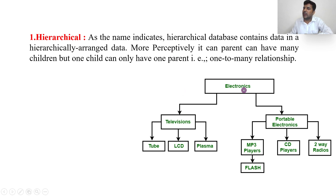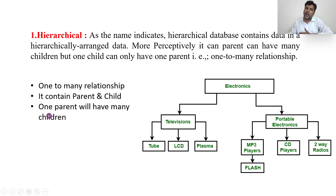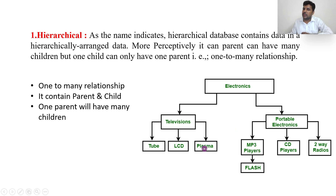The hierarchical model contains one parent and that parent will have many children. That's why it is called a one-to-many relationship — one parent will have many children. For example, Television is a parent for Tube, LCD, and Plasma; Portable Electronics is a parent for MP3 Player, CD Player, and Two-Way Radio. Now, Plasma cannot be directly connected to the MP3 Player — it has to communicate through Television, then Electronics, and then Portable Electronics. That's why it is a one-to-many relationship.